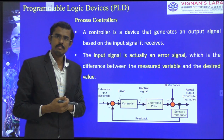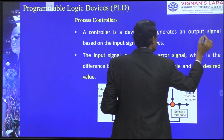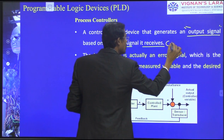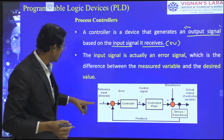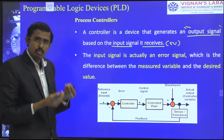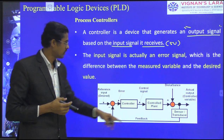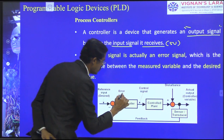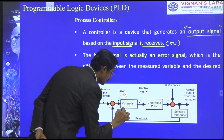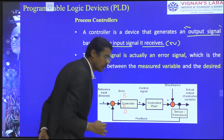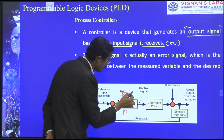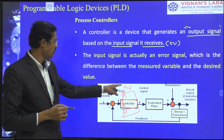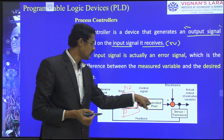A controller is a device that generates an output signal based on the input signal it receives. The reference input is the desired value. From the error detector, the controlling circuit is given to the controller. Here we have a P controller, I controller, and D controller — all together making the framework of a PID controller. The control signal is then sent to the plant.